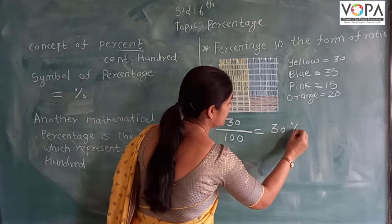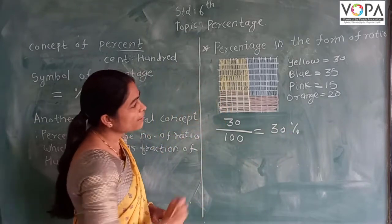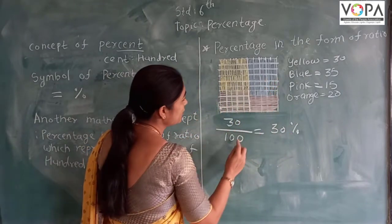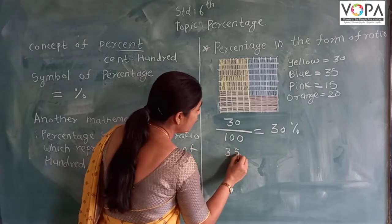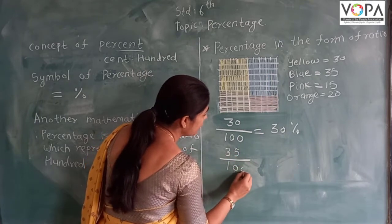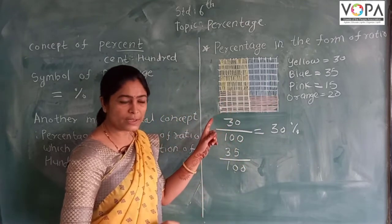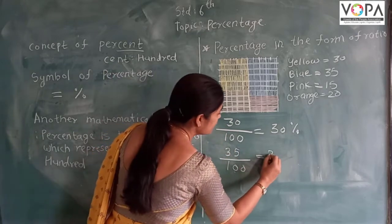After that, there are blue boxes. Out of 100, there are 35 boxes that are blue in color, so we can write it as 35 percent.